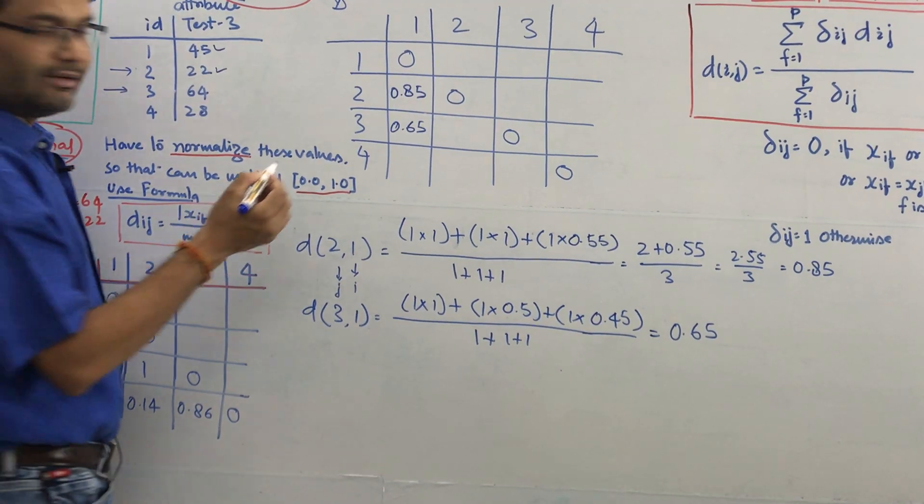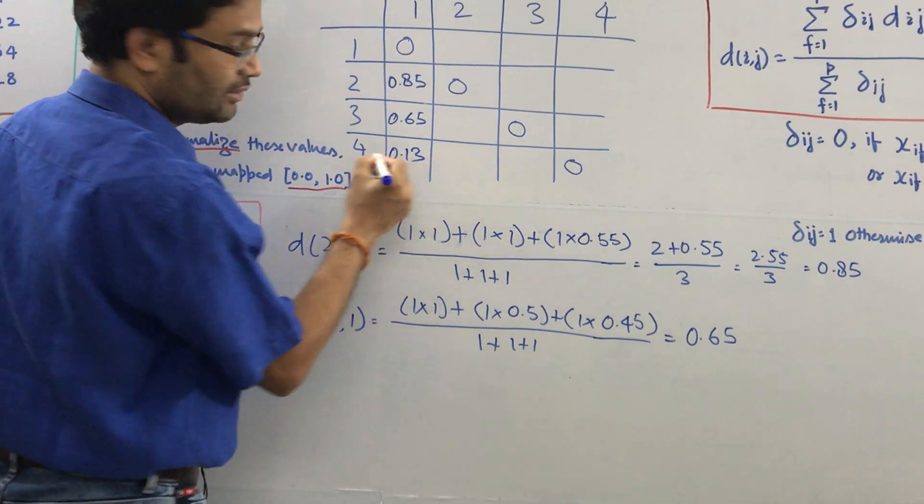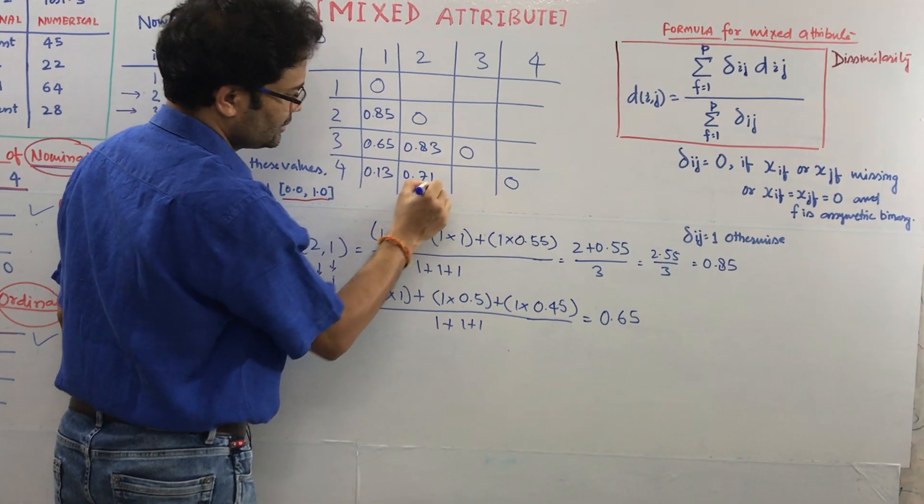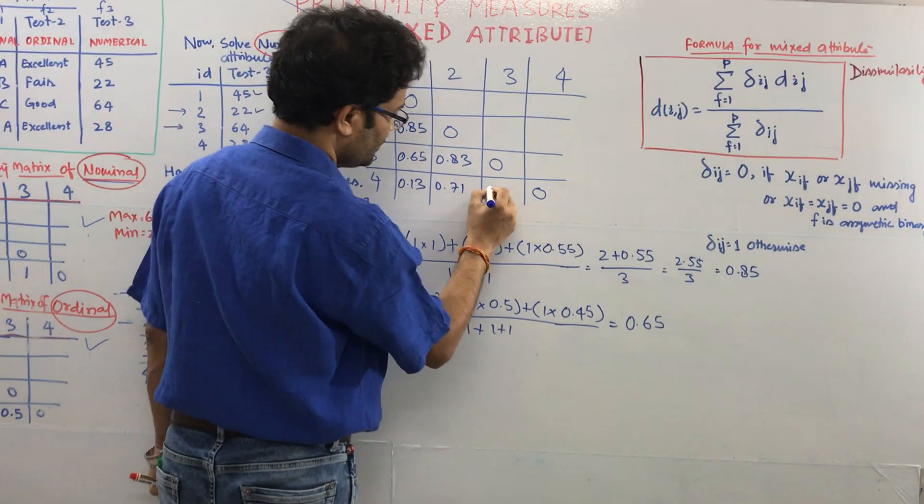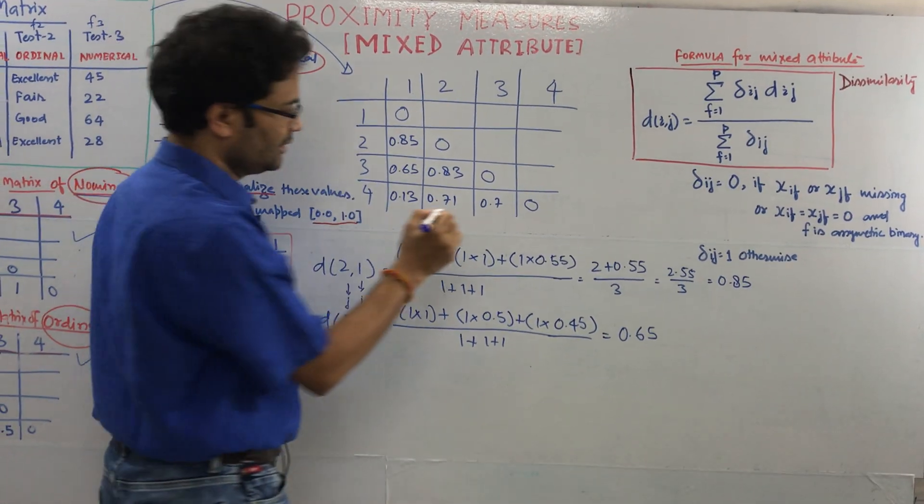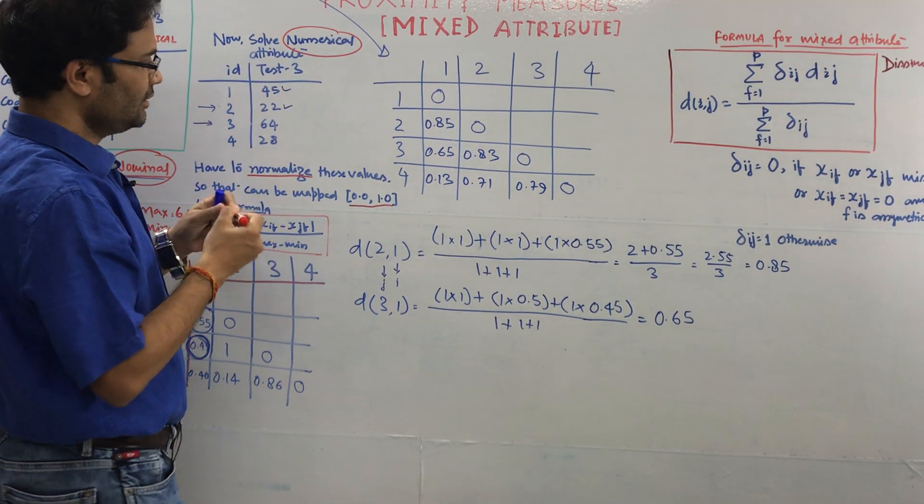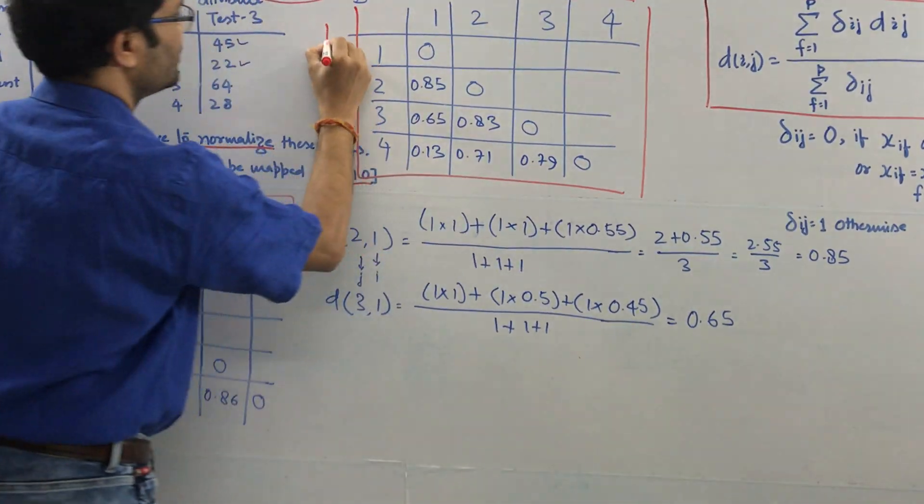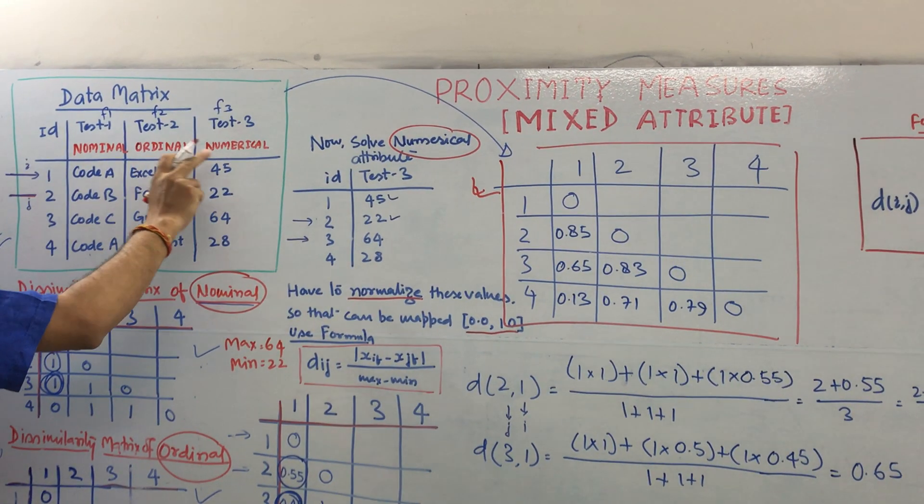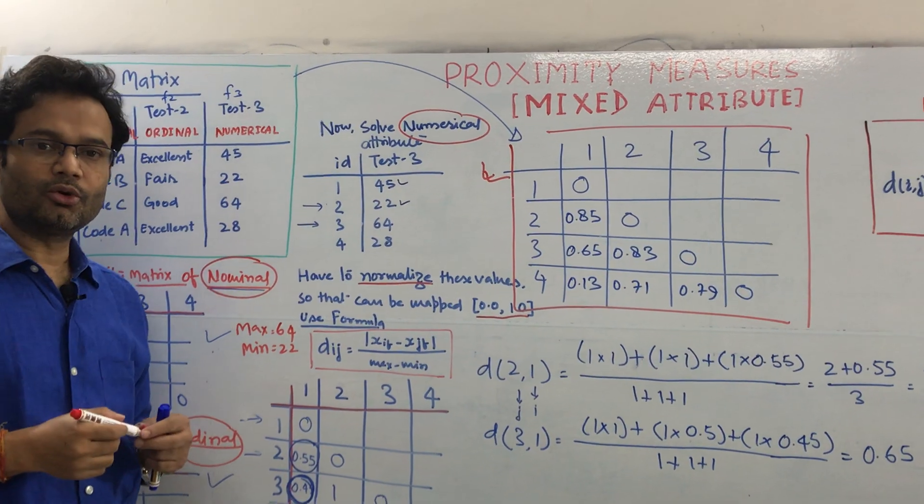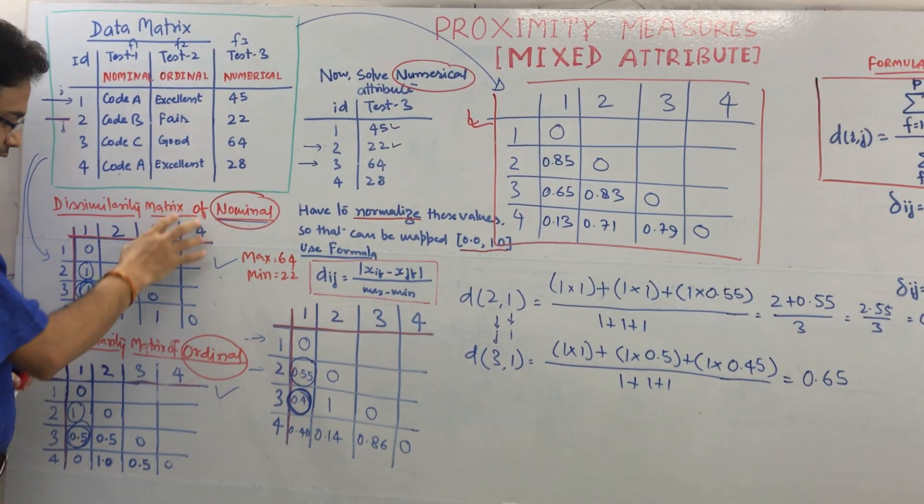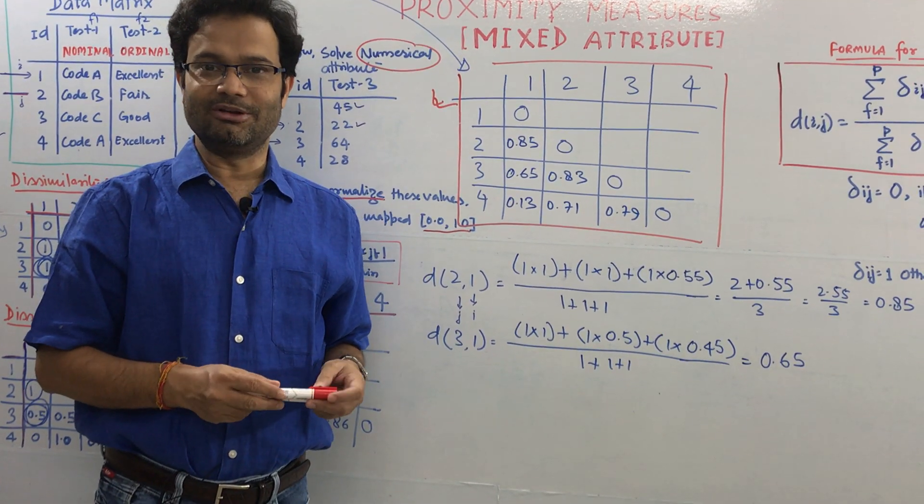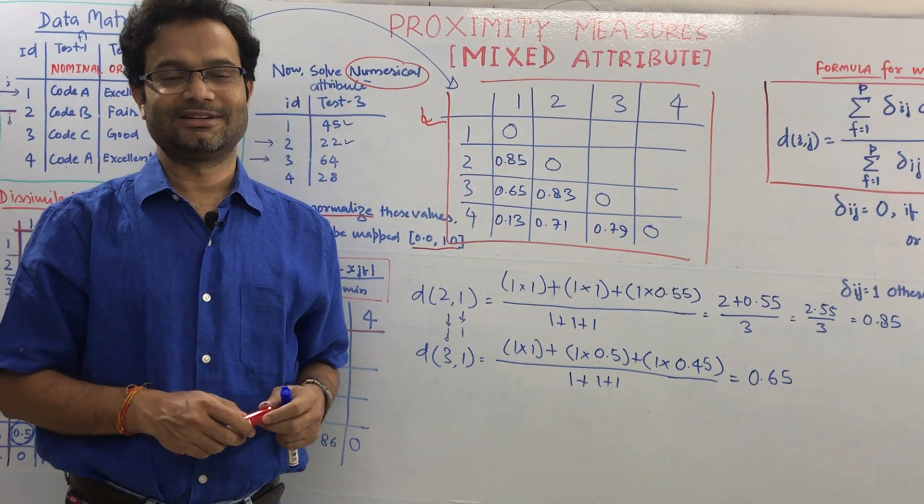This will become 0.75, and this is the way we have to do that. If you calculate the same way, your final answer would be 0.13, 0.83, this will be 0.71 and 0.79. This is the final dissimilarity matrix for the given mixed attribute. I would recommend please visit the previous video to understand how I calculated this matrix, and please do not forget to subscribe this channel. It motivates me a lot to generate a lot of new videos. Thank you very much.